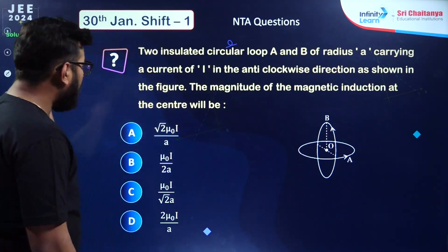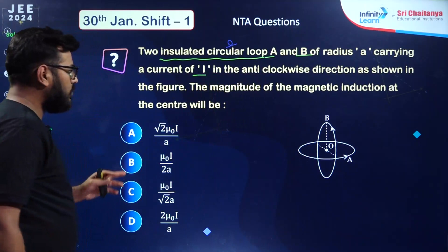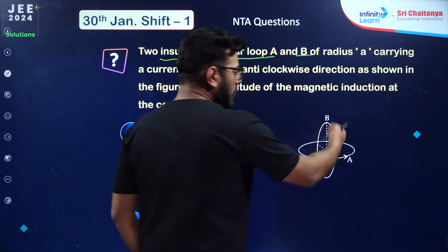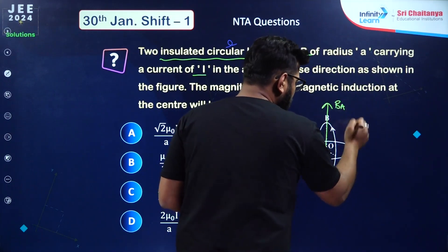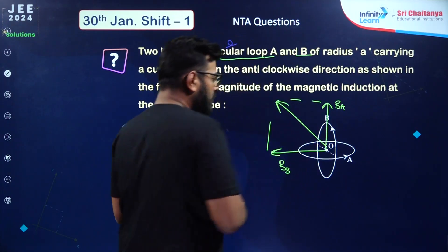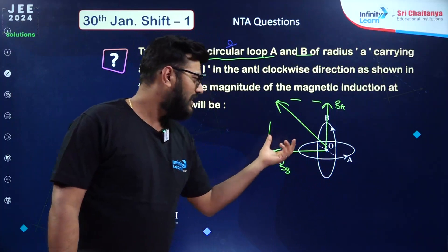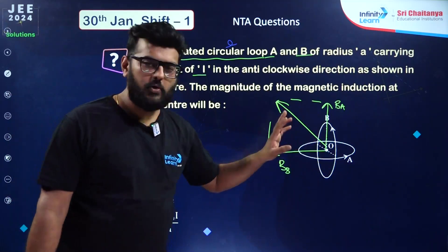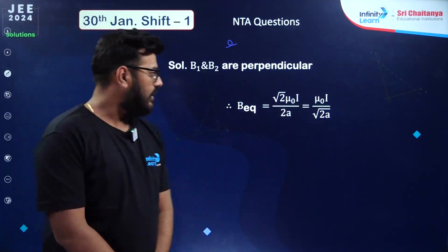From moving charges and magnetism: two insulated circular loops A and B of radius a carrying current I in anti-clockwise direction. The magnitude of magnetic induction at the center — because of both loops the magnetic fields are perpendicular to each other. Both have the same magnitude since radius and current are the same. The net result is the vector sum, giving root 2 times (μ₀/4π)(2πI/r). Option number C is the correct answer.